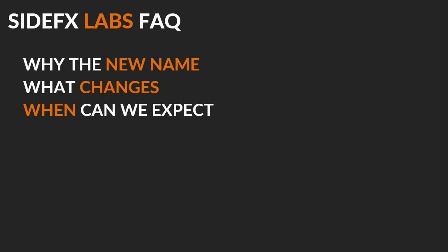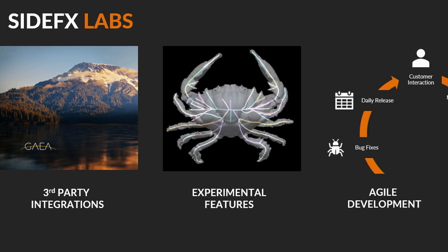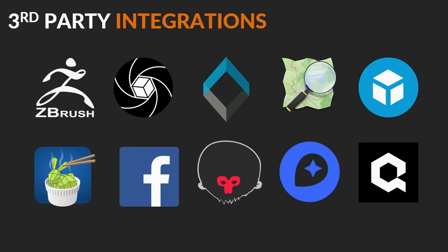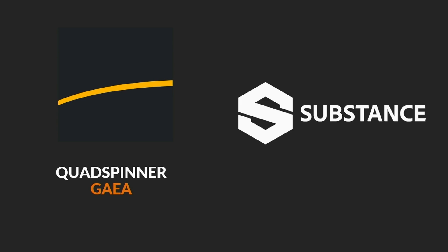One thing we're going to start pushing harder is convergence — a lot of tools we build are used by film, and a lot of tools film wants to build games use too. That customer loop has now expanded to the whole industry, so these tools will get the rigor of both industries. As for what Labs will be responsible for: third-party integrations — we have 10 of these at this point including ZBrush, Reality Capture, Alice Vision, OSM, Sketchfab, Instant Meshes, Facebook 3D Exporter, Marmoset, Mapbox, and the Quixel Bridge. Two new ones to announce today: an integration into Quad Spinner's Gaia and a COPS integration into Substance.